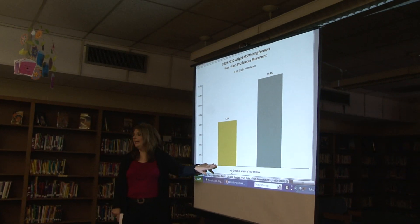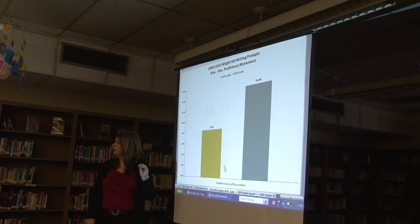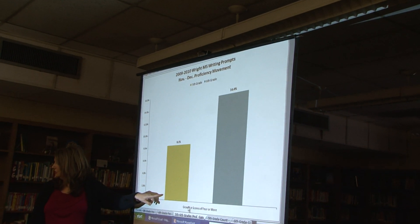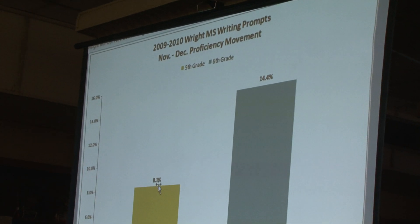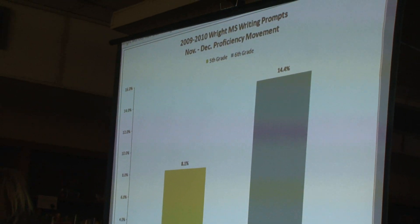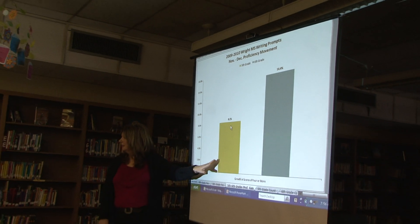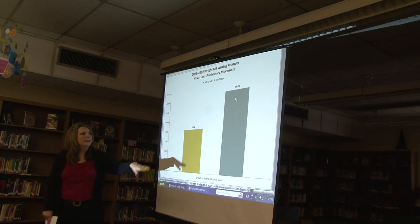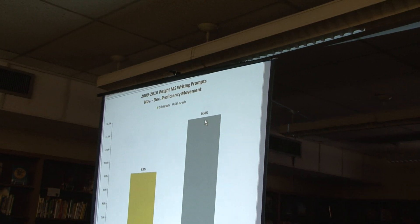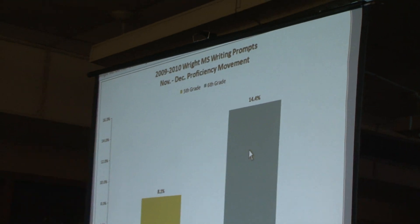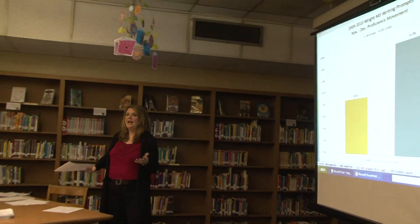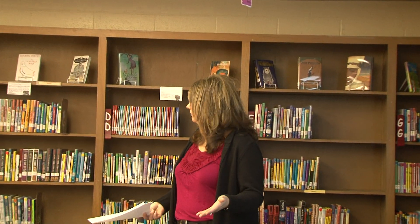For fifth grade you had a gain — these are for scores four and higher, so proficient and higher. You moved 8.1% of your students between November and December. There was not a lot of instructional time and you really hit the ground running with great practices. Sixth grade has an impressive 14.4% gain moving kids to proficient and higher. Our overall goal is a minimum of 89% proficient, meaning scoring four or higher.